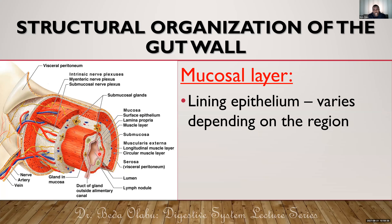The rest of the GIT, which doesn't experience a lot of friction, will have simple columnar epithelium. Simple columnar epithelium extends from the stomach all the way to the rectum. The parts that experience a lot of friction — oral cavity, esophagus, pharynx, and the anal canal — have stratified squamous epithelium.